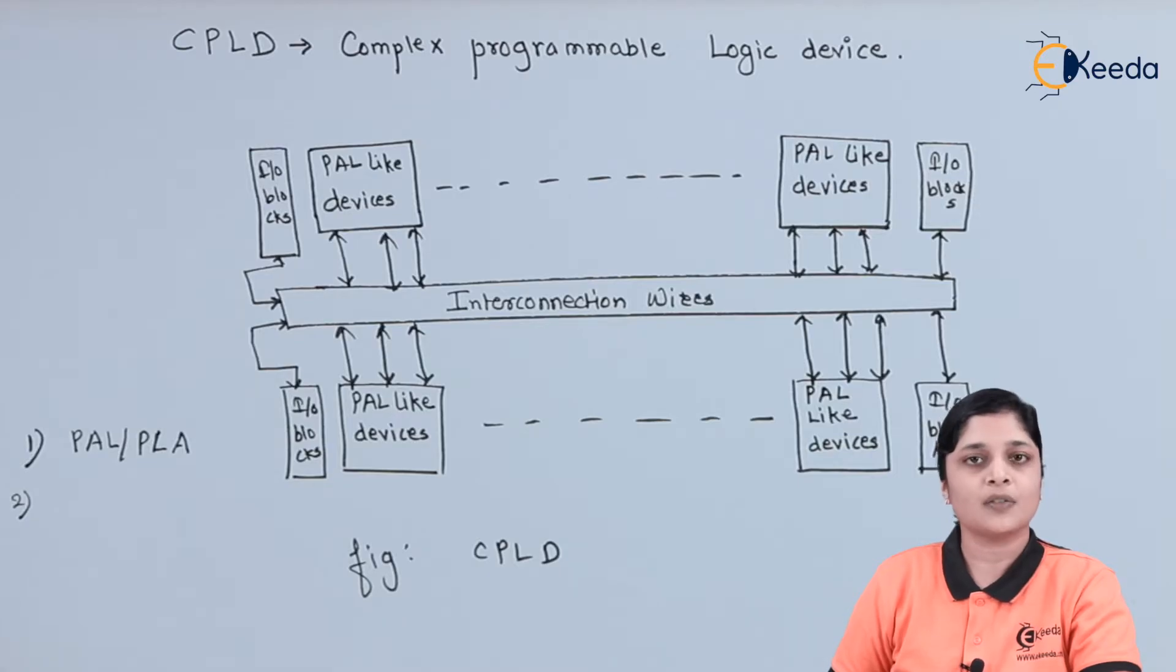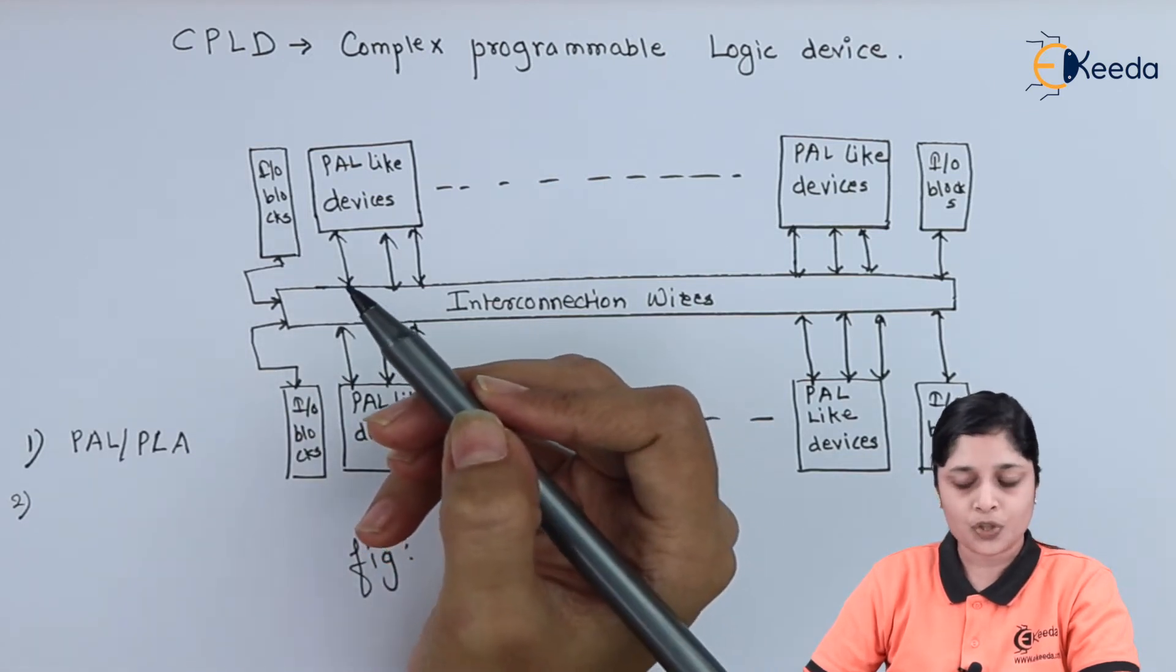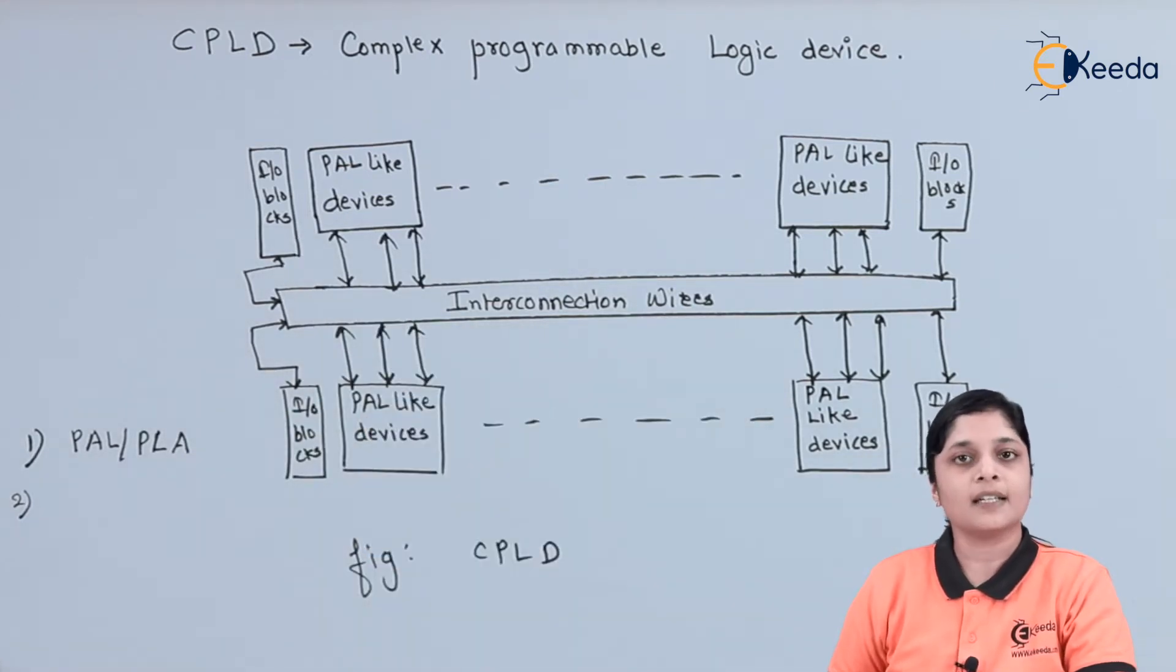Next point: interconnection between the devices is programmable. Here IO blocks are also used. The interconnection between the devices is programmable.